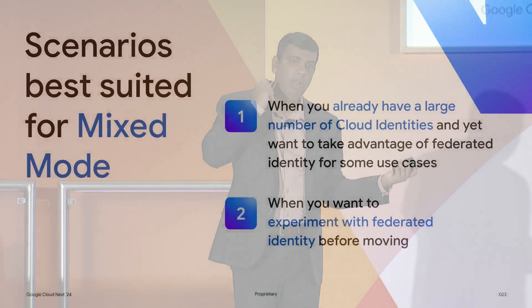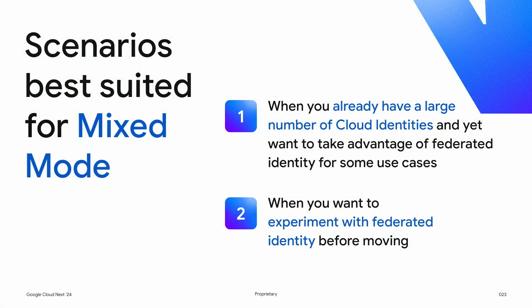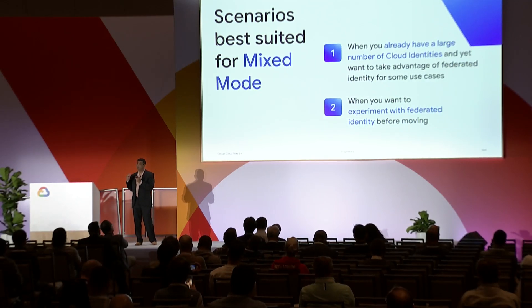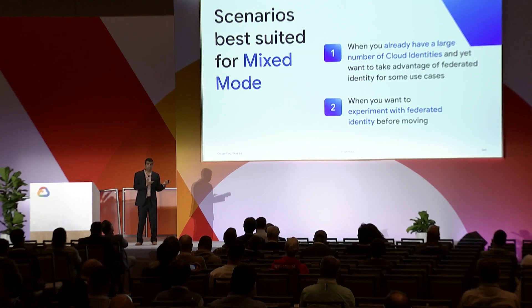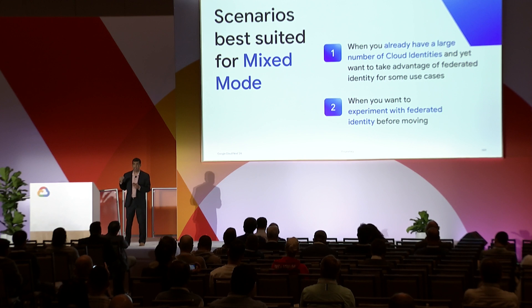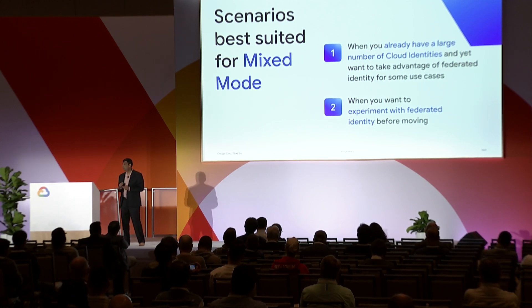You can use cloud identity and federated identity together in mixed mode. For example, if you have a contractor you want to give access to certain GCS buckets without syncing their identities to the platform, you just use mixed mode — most identities remain cloud identities while a few are federated. Mixed mode is one of the most common scenarios we're seeing, especially for organizations already deeply ingrained in cloud identity. If you're starting fresh, definitely consider federated identities.